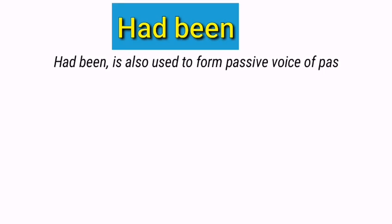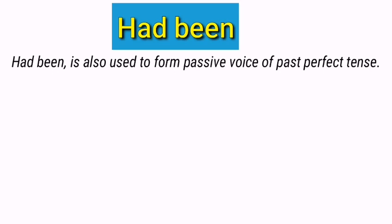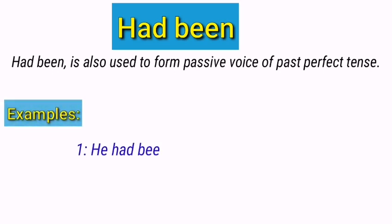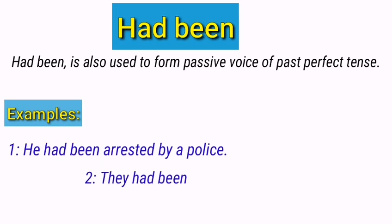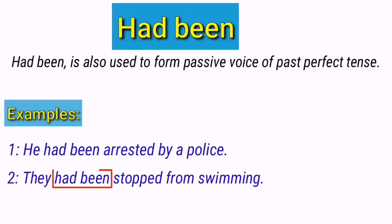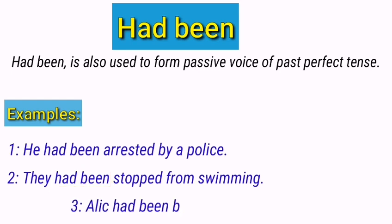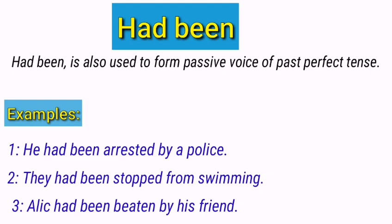The next usage: 'had been' is also used to form passive voice of past perfect tense. This phrase can be used with all subjects to make passive voice. He had been arrested by the police — this is a passive sentence because he did not arrest the police, but the police arrested him. They had been stopped from swimming — they did not do something, but something happened to them. Alec had been beaten by his friend — also a passive voice sentence of past perfect tense, formed through 'had been.'